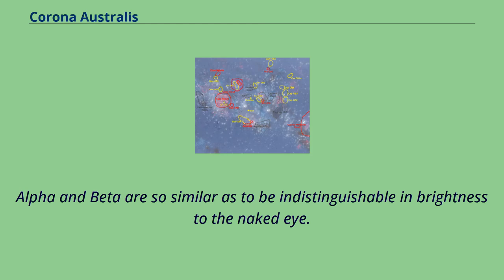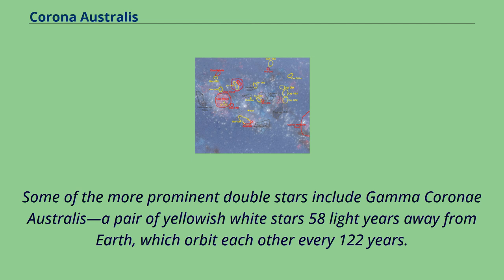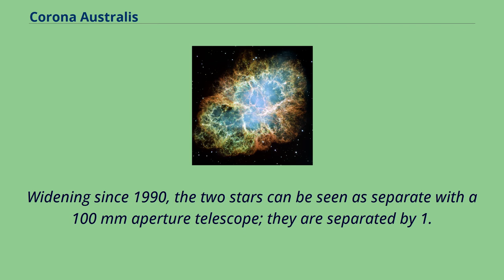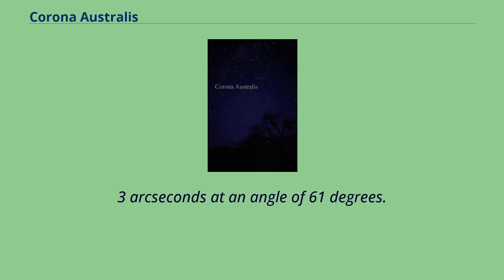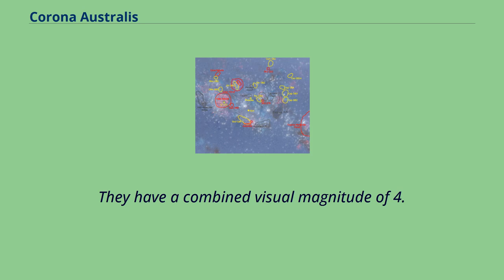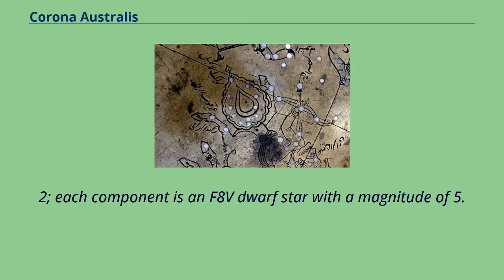Some of the more prominent double stars include Gamma Coroni Australis, a pair of yellowish-white stars 58 light-years away from Earth, which orbit each other every 122 years. Widening since 1990, the two stars can be seen as separate with a 100mm aperture telescope; they are separated by 1.3 arcseconds at an angle of 61 degrees. They have a combined visual magnitude of 4.2, and each component is an F8V dwarf star with a magnitude of 5.01.